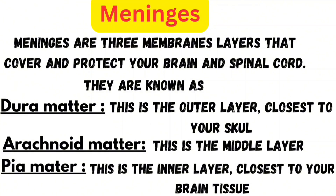Dura mater is the outer layer closest to your skull and acts like a strong shield protecting your brain from external injuries. Arachnoid mater is the middle layer and contains cerebrospinal fluid which helps absorb shock and allows the brain to float inside the skull. Pia mater is the inner layer closest to the brain tissue and supplies oxygen and nutrients to the brain.